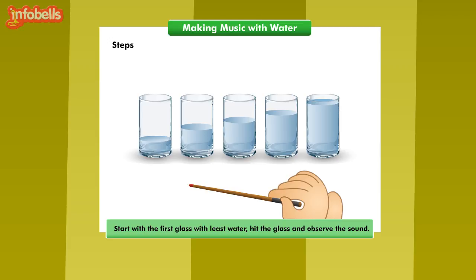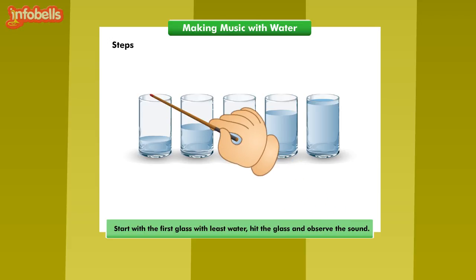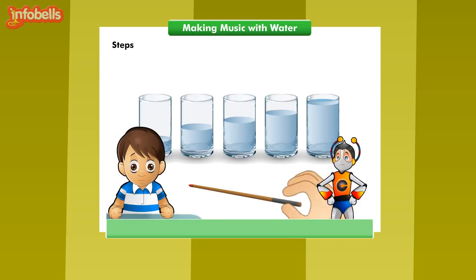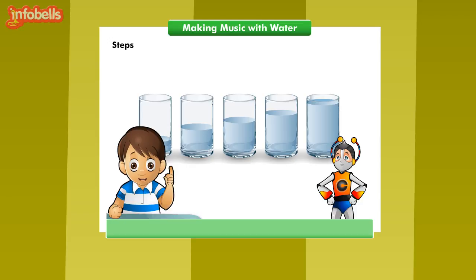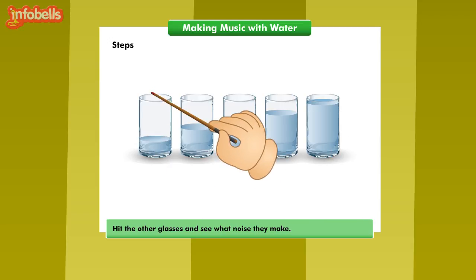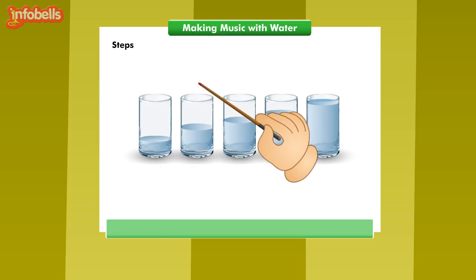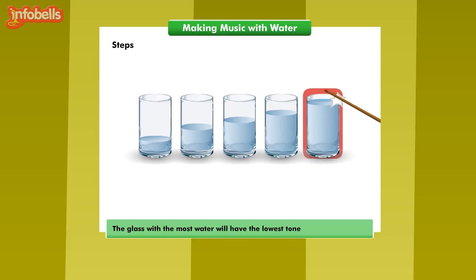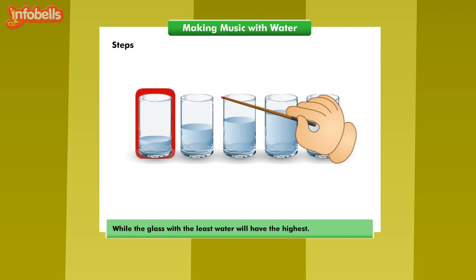Let us start with the first glass with the least water. Hit the glass and observe the sound. Now, hit on the last glass, which is almost full with water. Tell me, Yuvi, which is making the higher sound? The first glass with least water. Why is it, Chotu? Hit the other glasses and see what noise they make. Each of the glasses will have a different tone when hit with a pencil. The glass with the most water will have the lowest tone, while the glass with the least water will have the highest.